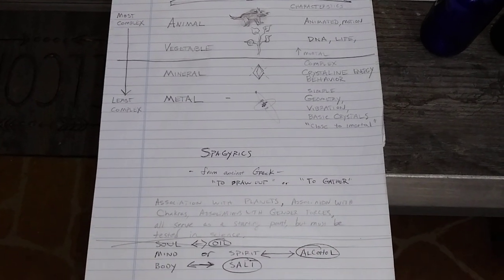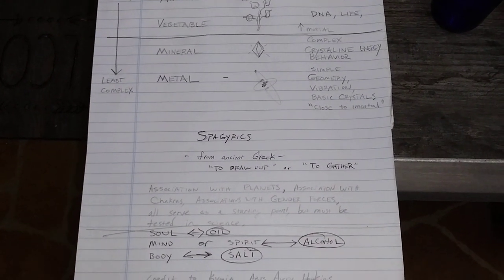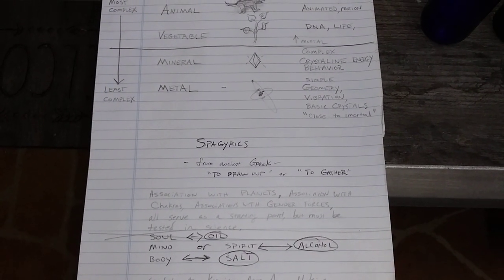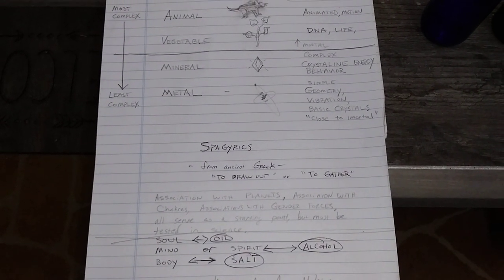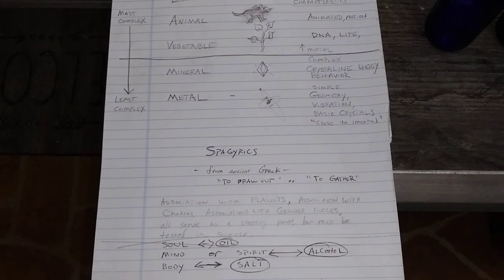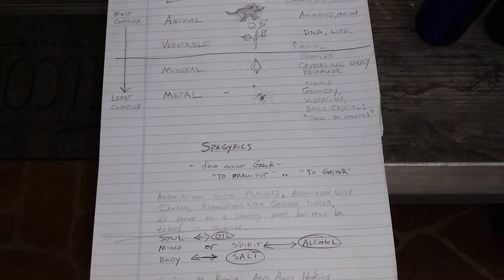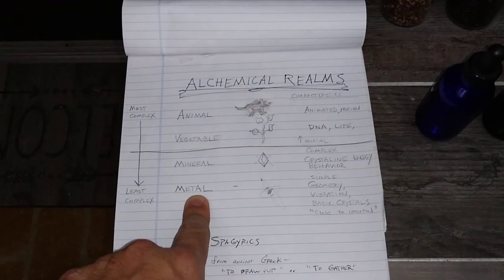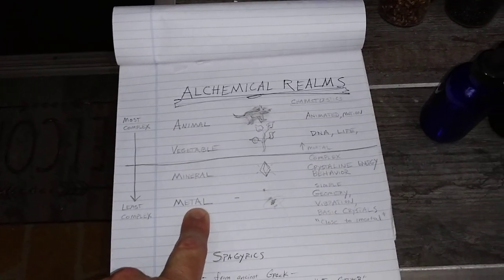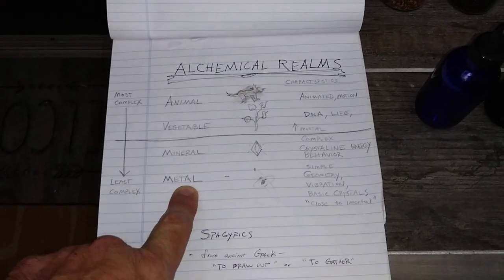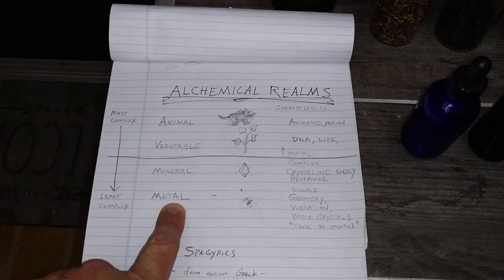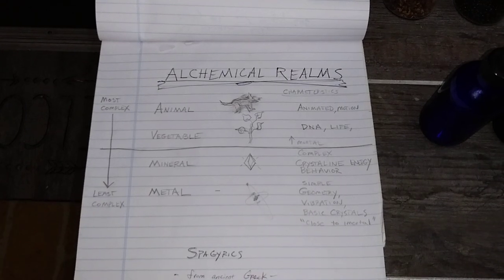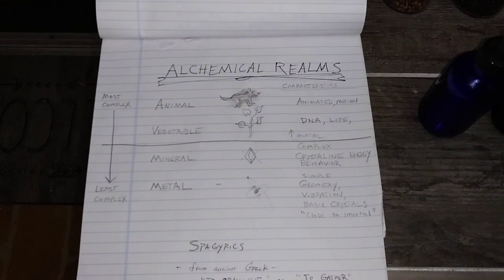When you talk about these sort of things, generally people associate them with planets or associations with chakras — that is to say, energy levels in the body — even gender or other forces. To give you an example, there are medicines that come from metal. For example, colloidal silver. Silver creams are great for burns, and silver can be used as an antiseptic. It's a very good substance as a medicine, colloidal silver.